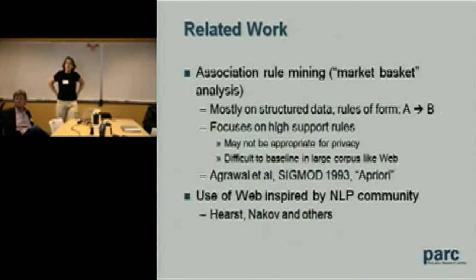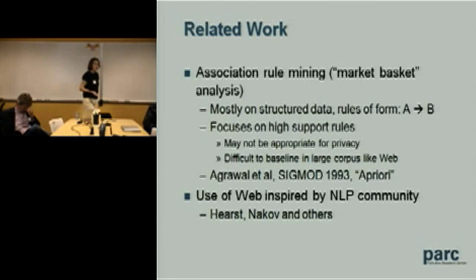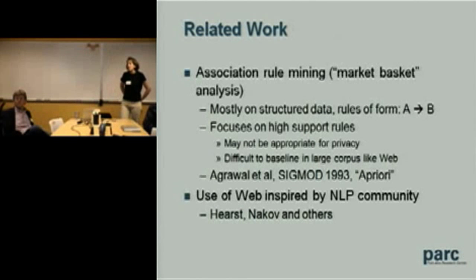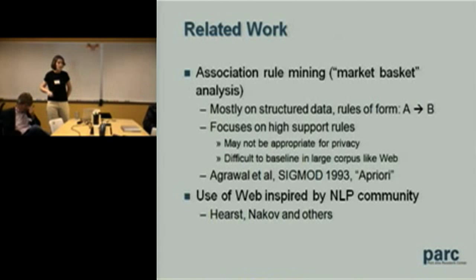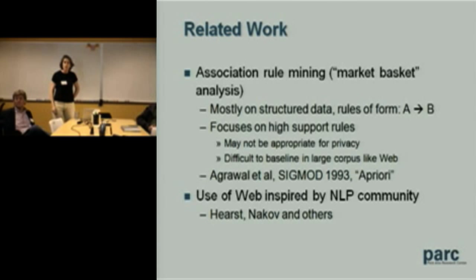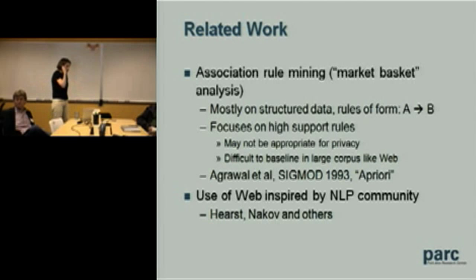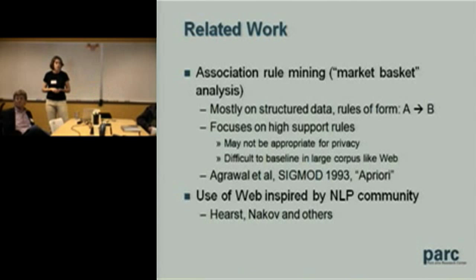Briefly on related work: there's a lot of work in association rule mining, particularly in structured data settings. They look for rules of the form A implies B, where A and B are usually products in a grocery store. They focus on high-support rules — rules satisfied by many records. For privacy, that may not make sense, because privacy is a needle-in-a-haystack problem. Even a rule without high support may be a privacy problem. Also, with a large corpus like the web, it's hard to baseline what 'high support' means. Our use of the web is inspired by what the NLP community has been doing to model human knowledge and disambiguate text.